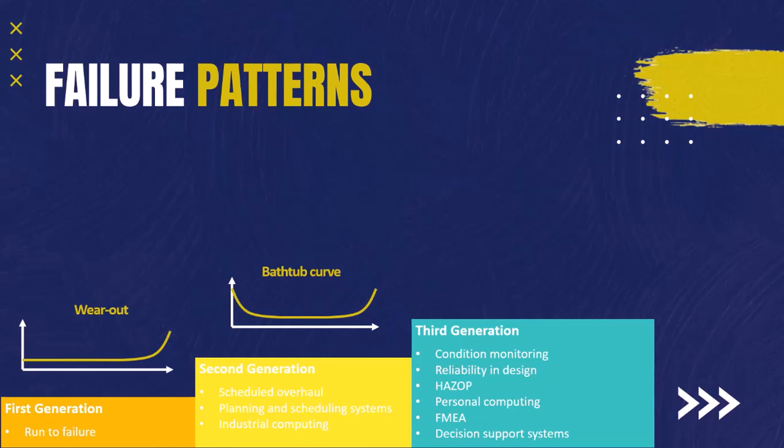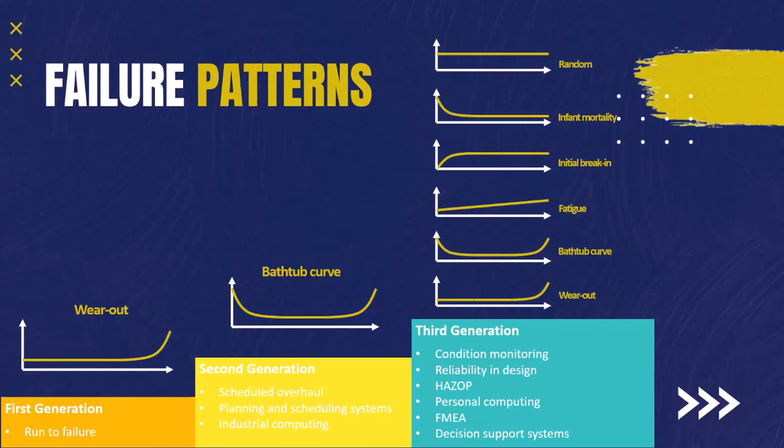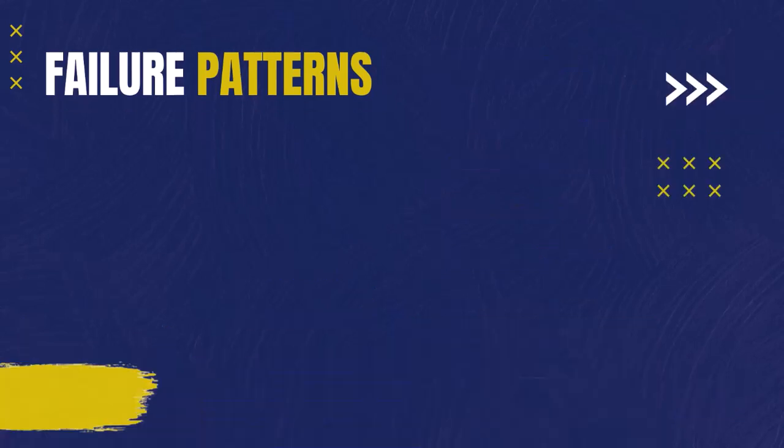Now we have a total of six hazard curves: first, the wear out pattern initially adopted in the first generation; second, the bathtub curve adopted in the second generation; then four other patterns which are fatigue, initial break-in, infant mortality, and random failures. Unfortunately many organizations are still following the second generation mentality which adopts the bathtub curve, which is very outdated. In the fourth generation there are even more curves being developed but they are still under study.